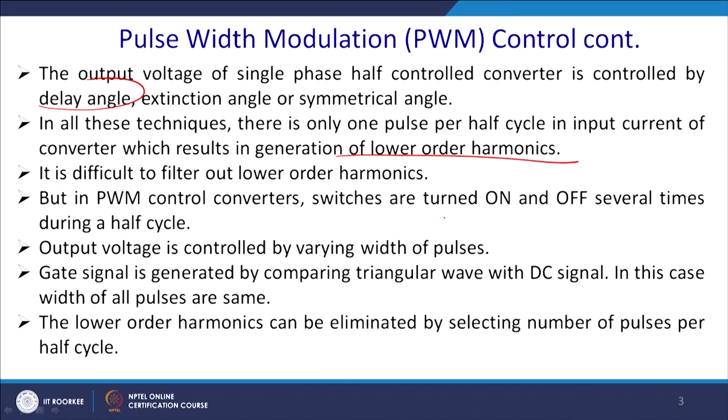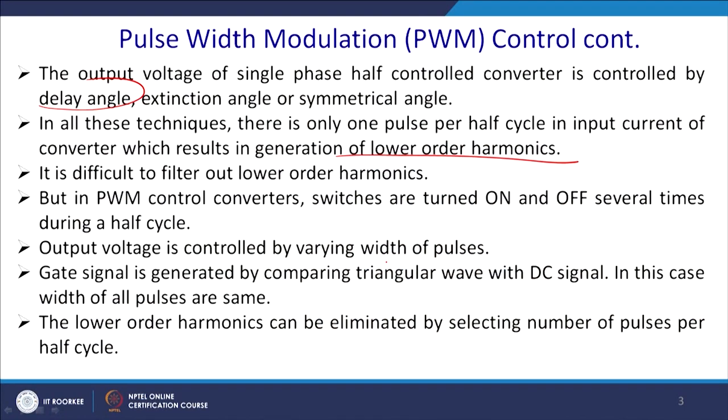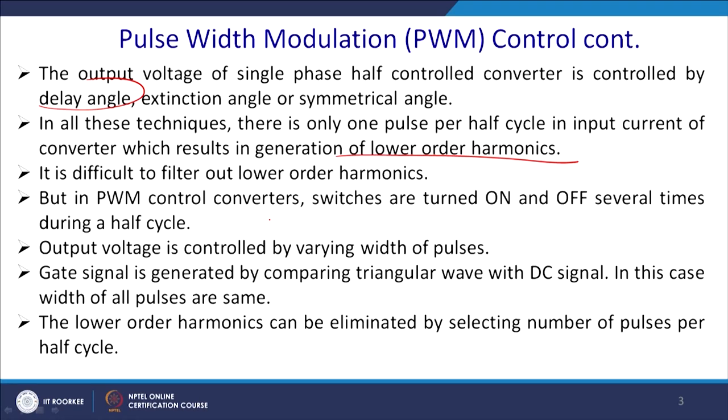It is difficult to filter out lower-order harmonics because the size of the filter becomes quite large and bulky. PWM control converters switch on and off several times during the half cycle, shifting those frequencies to higher order, thus reducing the filter size. This mitigates the lower-order harmonics.